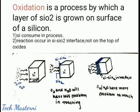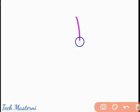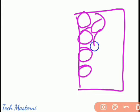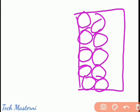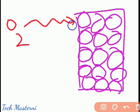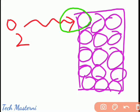Oxidation is a process by which a layer of SiO2 is grown on the surface of silicon. In this process, silicon is consumed and the reaction occurs at the silicon–SiO2 interface, not on the top of the surface. So we have our silicon wafer with silicon atoms placed in it. When we apply an oxygen source, the oxygen reacts with silicon and creates an SiO2 layer. The SiO2 layer will be larger than the silicon atoms because the SiO2 volume is larger than the silicon volume.